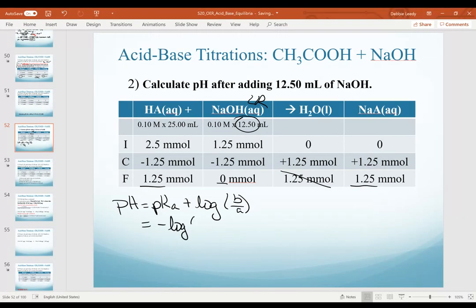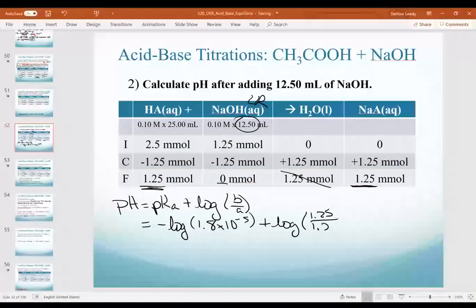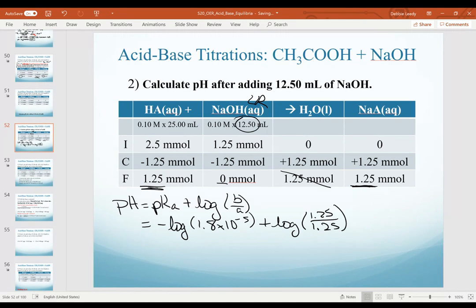Our pKa is calculated as the negative log of our Ka value. That is still the 1.8 times 10 to the minus 5. Now, plugging in our ratio of our base to acid, remember our sodium acetate is our base, and our acetic acid is our acid. Of course, because of the same values, this ratio is a value of 1. Remember that the log of 1 goes to zero. When we plug everything in, we find that we get a pH value of 4.74.